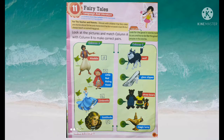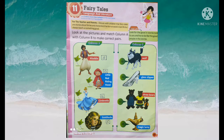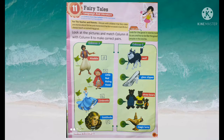Fourth picture: Goldilocks. Goldilocks is a small girl. What happens in that story? We have three bears. The answer is option C — three bears. So you have to write option C. This chapter has fairy tale names in Column A and characters in Column B, which you have to complete.